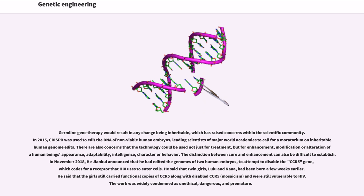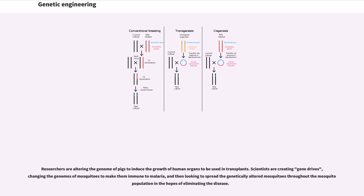The work was widely condemned as unethical, dangerous, and premature. Researchers are altering the genome of pigs to induce the growth of human organs to be used in transplants. Scientists are creating gene drives, changing the genomes of mosquitoes to make them immune to malaria, and then looking to spread the genetically altered mosquitoes throughout the mosquito population in the hopes of eliminating the disease.